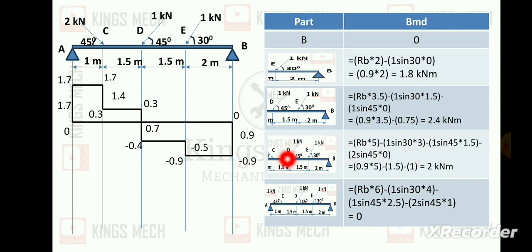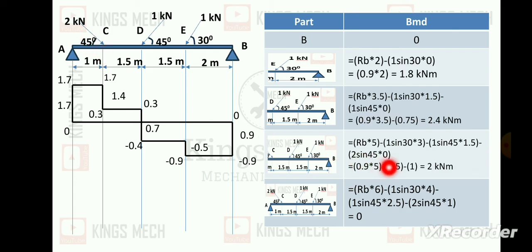At the next point: we add 1 sin 45 into the covering distance of 1.5, and finally 2 kilo newton into 0. After combining all values, we get 2 kilo newton meter at that point.